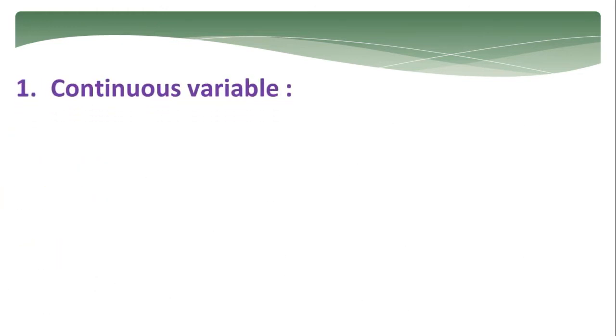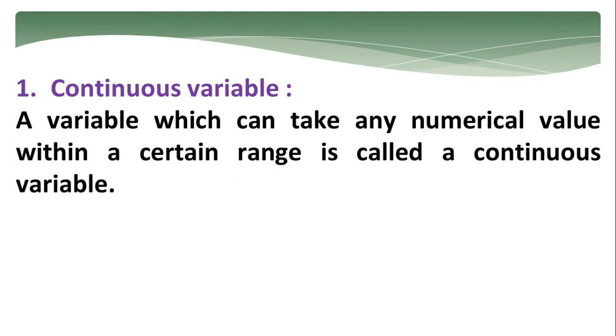Continuous variable. What is this continuous variable? In the variable itself, we have two parts. One is continuous. A variable which can take any numerical value within a certain range is called a continuous variable. For example, wages of person, rainfall records of different cities on different days and heights of children.